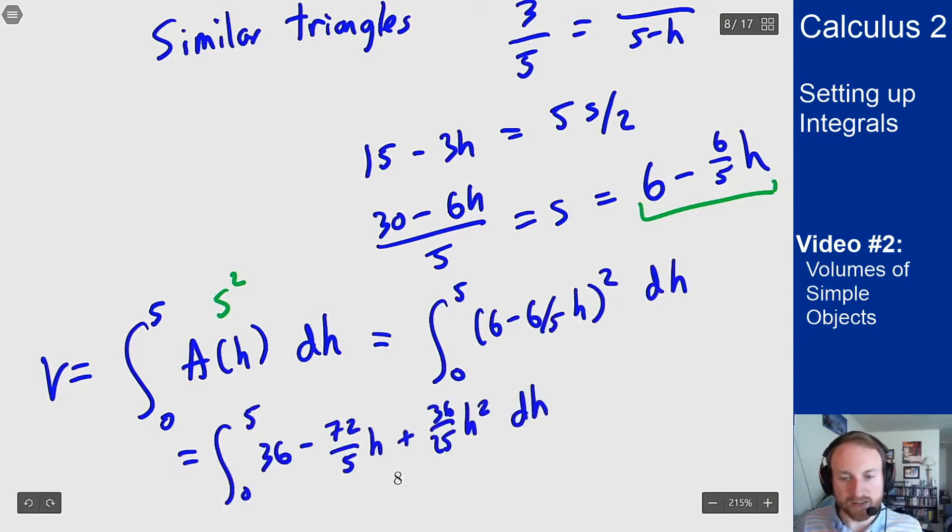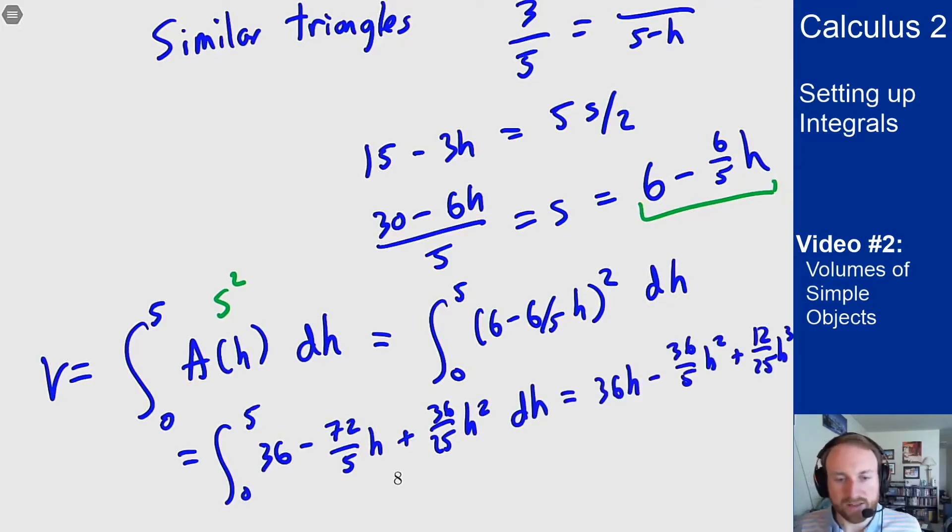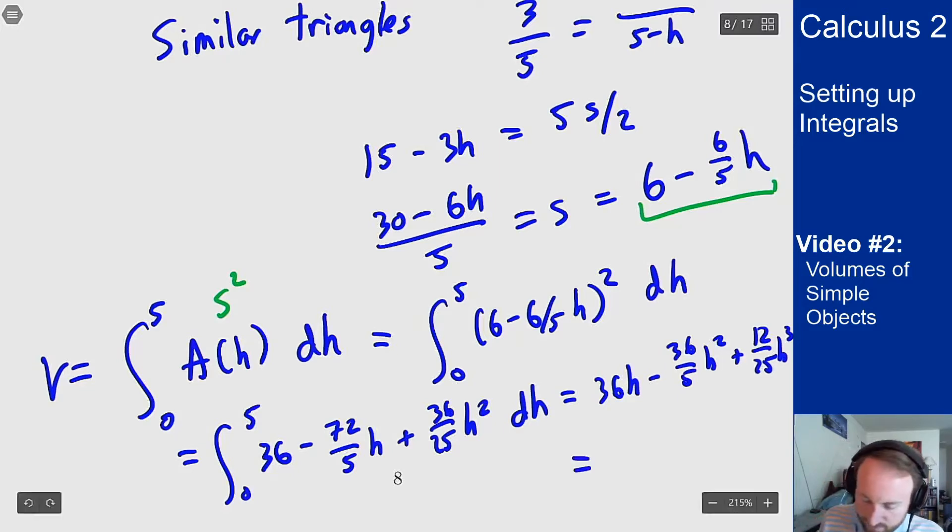I expand out the perfect square to get that. I can then integrate the expression to find the antiderivative. So I then want to evaluate at 0 and 5. At 0 I get 0, and if I plug in 5, this all comes out to 60.